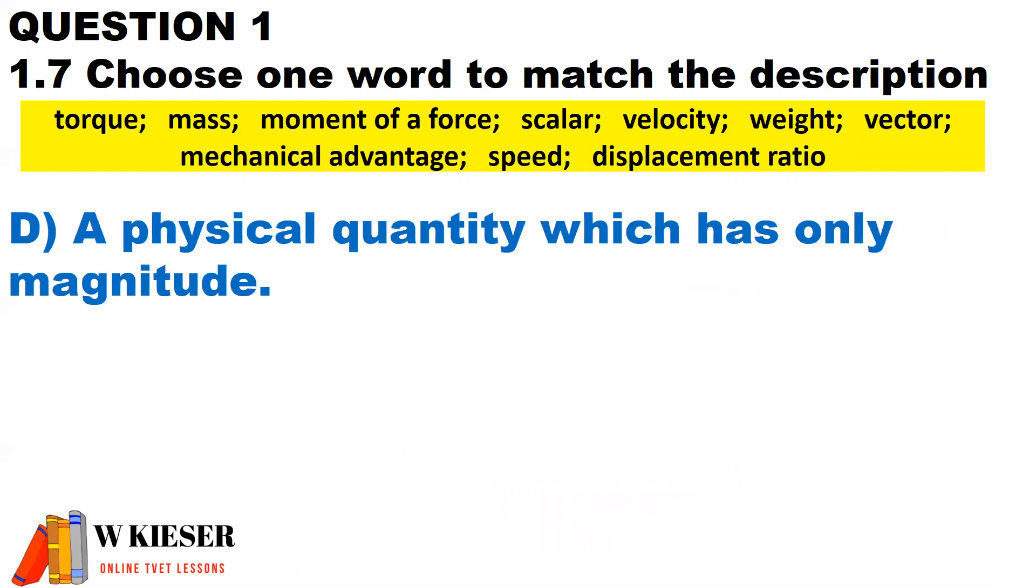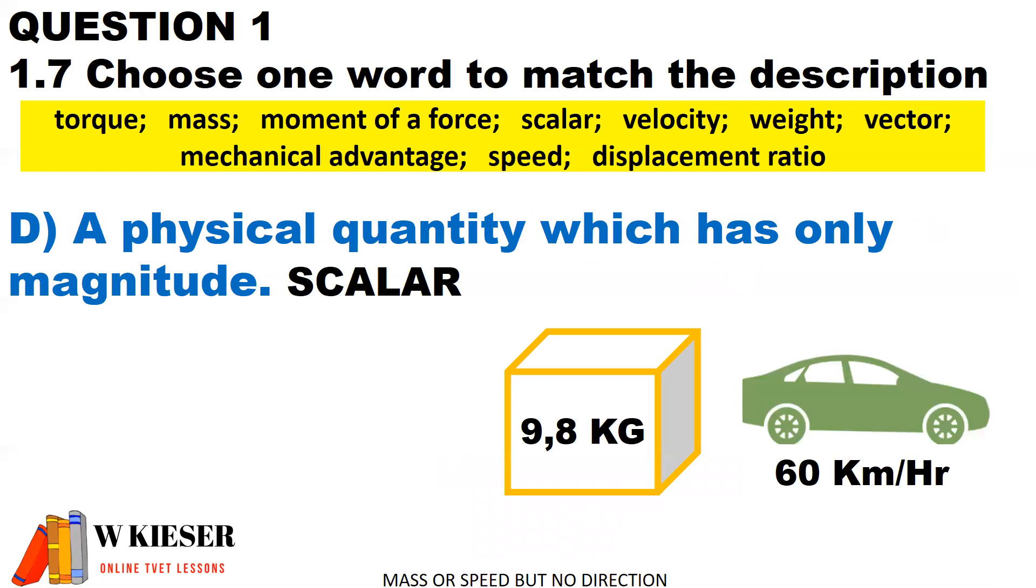In part D, a physical quantity which only has magnitude, in other words no direction, is referred to as a scalar. I've got two examples. We have a cube weighing 9.8 kilograms. We have a motor vehicle traveling at 60 kilometers per hour. In both cases, we have mass or speed, but no direction. So this is a scalar.